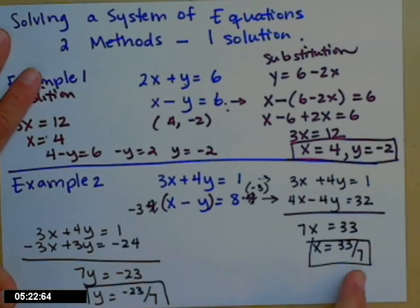So if x is 33 sevenths and y is negative 23 sevenths, and you plug those into both of these equations, they both are true. So you plug them into the top, everybody tidies up, and you get 1. Plug them in the bottom, what you get is 8.